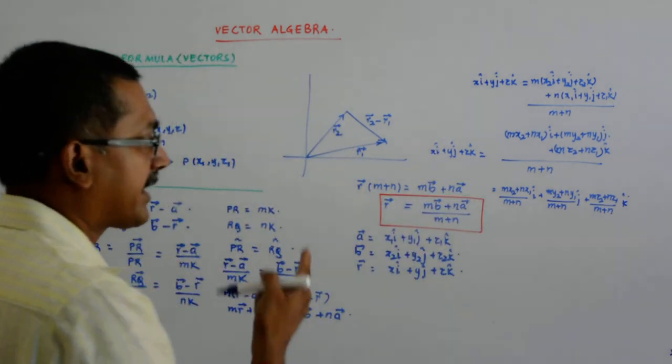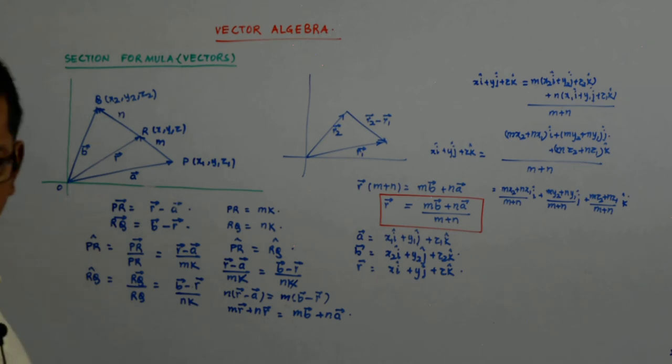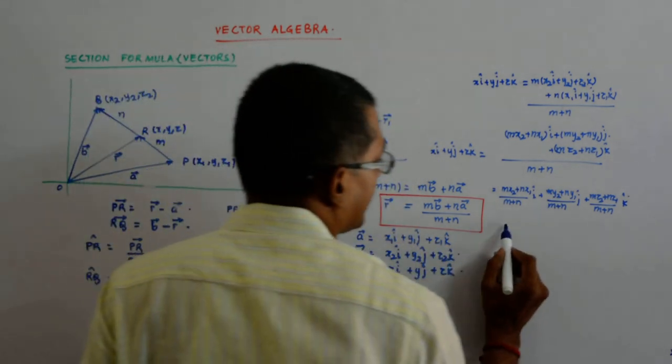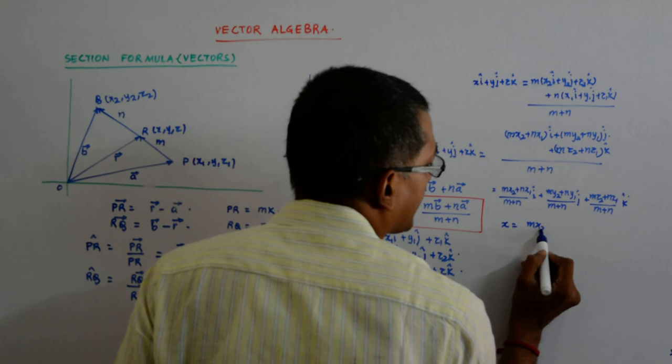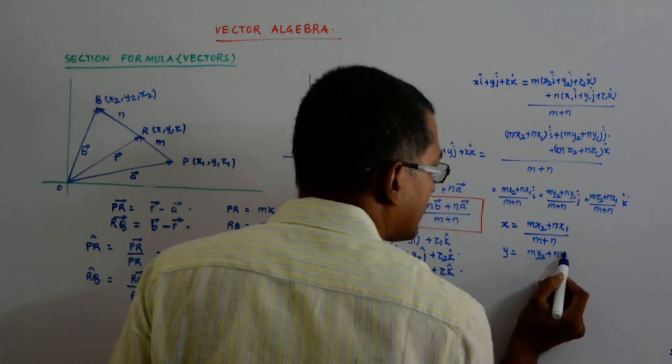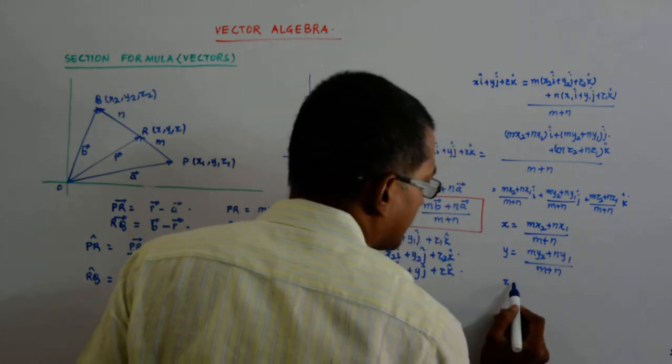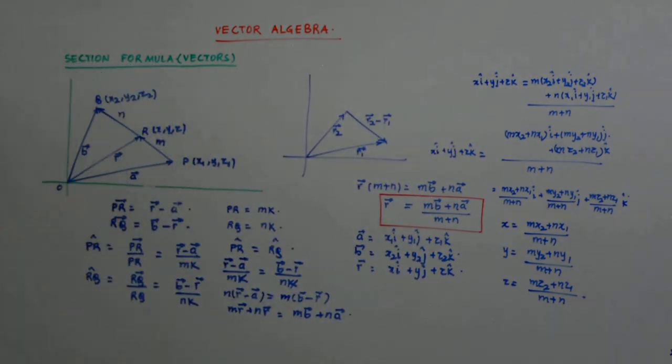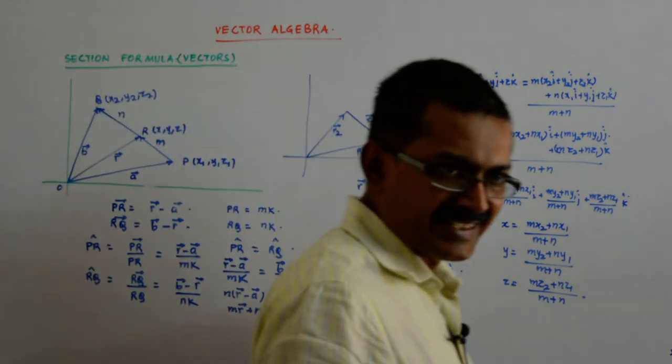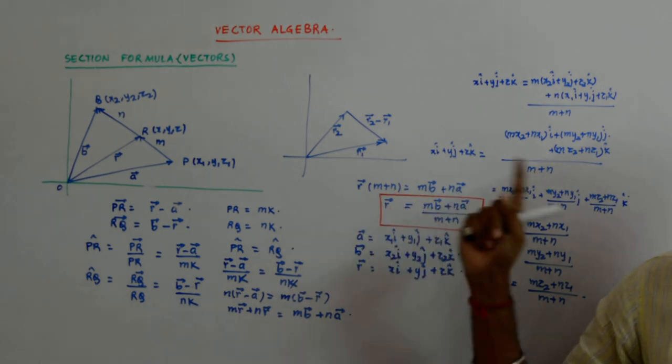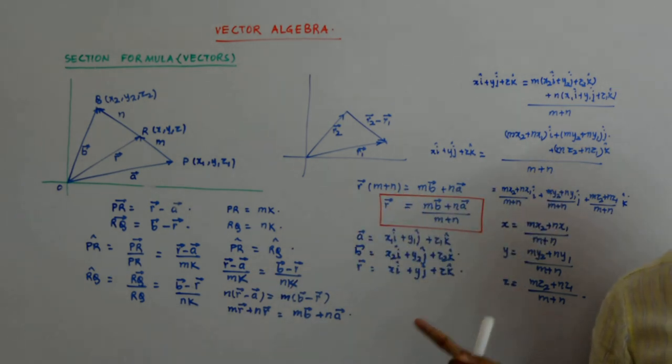And this is equal to this. Start equating the, when are two vectors said to be equal, when their corresponding i, j, k coefficients are the same. If you equate it, you get three equations: x is equal to mx2 plus nx1 upon m plus n, y is equal to my2 plus ny1 upon m plus n, z is equal to mz2 plus nz1 upon m plus n. You understand what is happening? The vector in itself is storing the information for all the three scalar equations. You understand? That is the power of vectors.